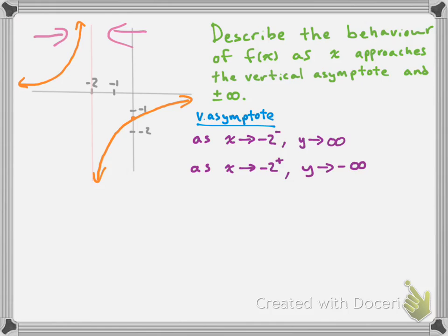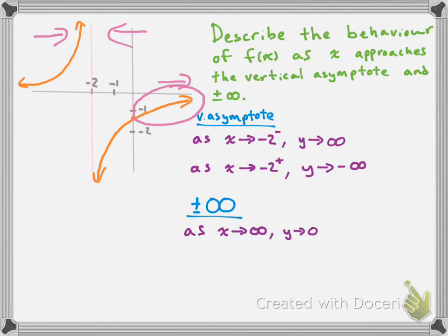That's the behavior as x approaches the vertical asymptote. Now let's look at behavior as x approaches positive and negative infinity. As x approaches positive infinity, the y-value of the function approaches the horizontal asymptote, which is the x-axis at y = 0. So as x → +∞, y → 0.